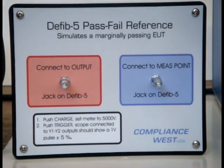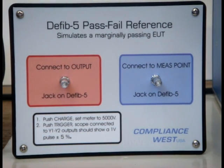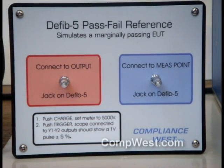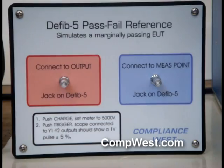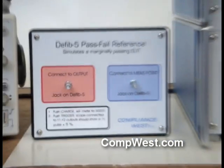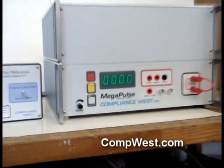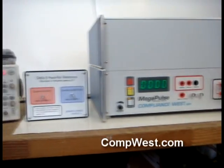Per the standard, if the output to the oscilloscope is more than one volt, the result is a test failure. Our test setup consists of the DFID-5, the pass-fail reference, and an oscilloscope.